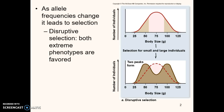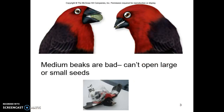A real-life example: when we look at different species of birds, sometimes the medium beaks are bad. That average beak size is no good — you can't crack a big seed because you're not strong enough, and you can't crack a small seed because you're too big. If you have a really big beak you eat certain seeds; a really small beak, other seeds. Medium-beaked birds don't survive, so those alleles become less and less common over generations. That is disruptive selection.